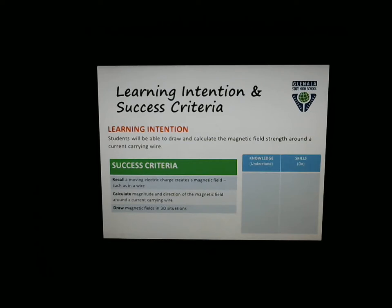If we look at the learning intention, we want students to be able to draw and calculate the magnetic field strength around a current carrying wire. Success should be that you can recall that a moving electric charge creates a magnetic field, calculate the magnitude and direction of a magnetic field around a wire, and draw the magnetic field in 3D situations. Outside of recall, there's not much you can ask about that, so I've only put three skills here: how to calculate field strength, determine direction, and draw the magnetic field.